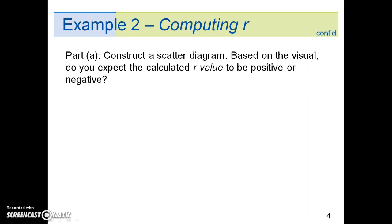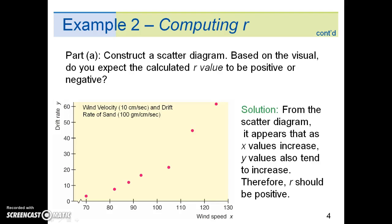Part A asked us to construct a scatter diagram. Based on the visual, do you expect the calculated r value to be positive or negative? The solution is provided here. From the scatter diagram, it appears that as x values increase, y values also tend to increase. Therefore, r should be positive.